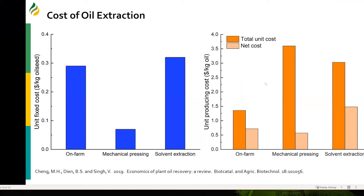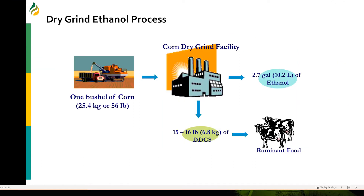That's the conventional picture — how edible oils are produced, how they are recovered, and what the cost is. Something very interesting happened in 2004. But before I get into that, let me briefly talk about the dry grind ethanol process. In a dry grind ethanol process, whole corn is ground and then it goes into a conventional dry grind ethanol facility.